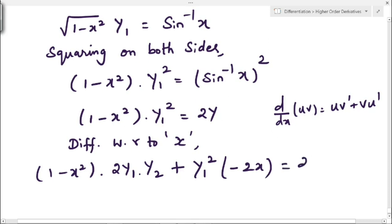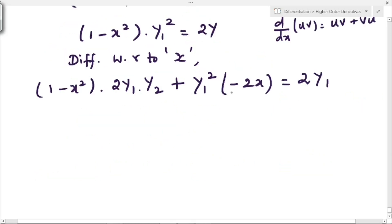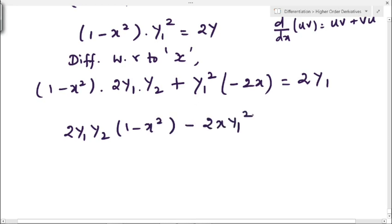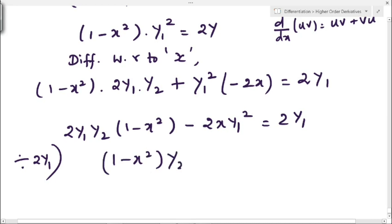So we have: 2y₁·y₂·(1 - x²) - 2x·y₁² = 2y₁. All three terms have 2 and y₁ in common, so dividing through by 2y₁ gives (1 - x²)·y₂ - x·y₁ = 1. This is exactly what we had to prove, so hence it is proved.